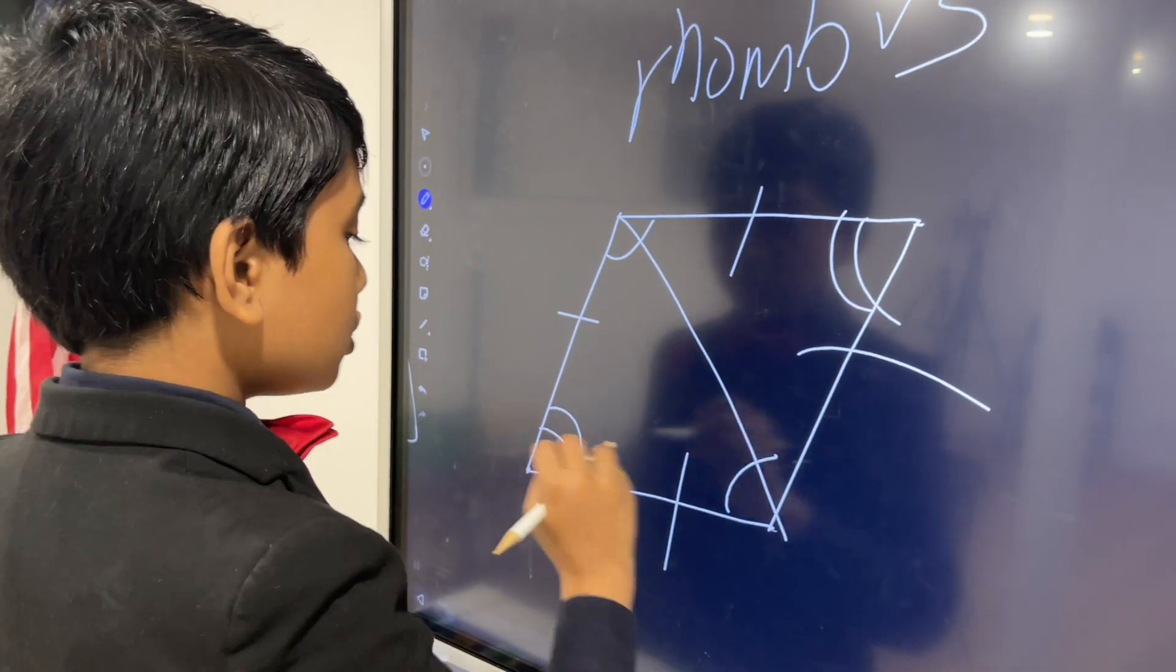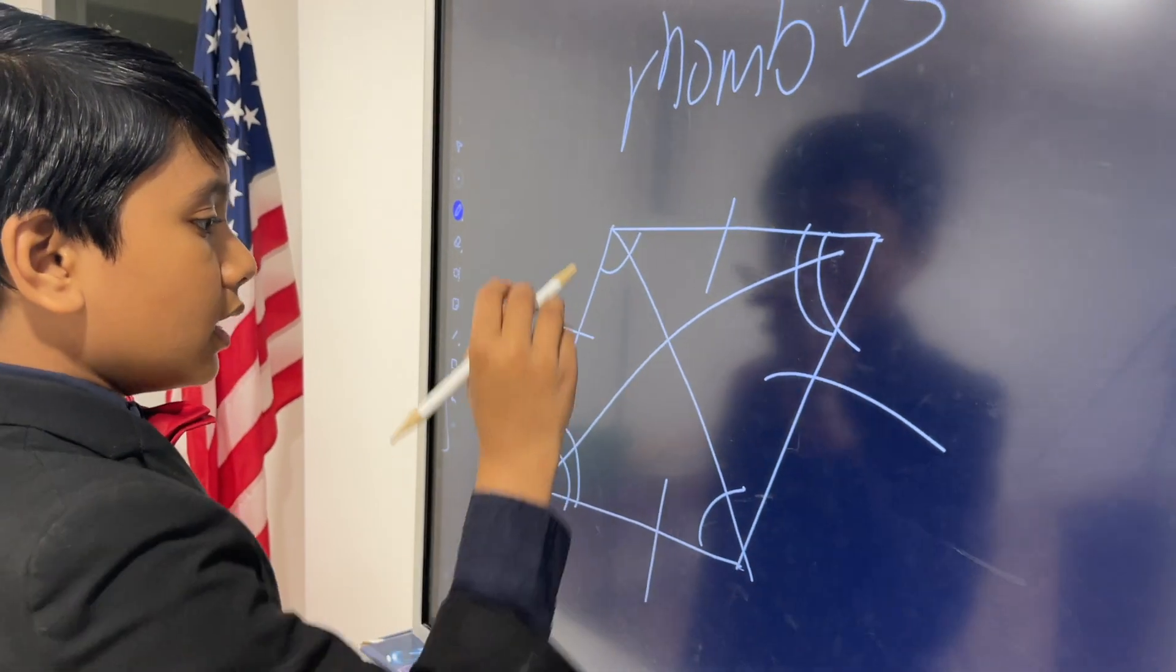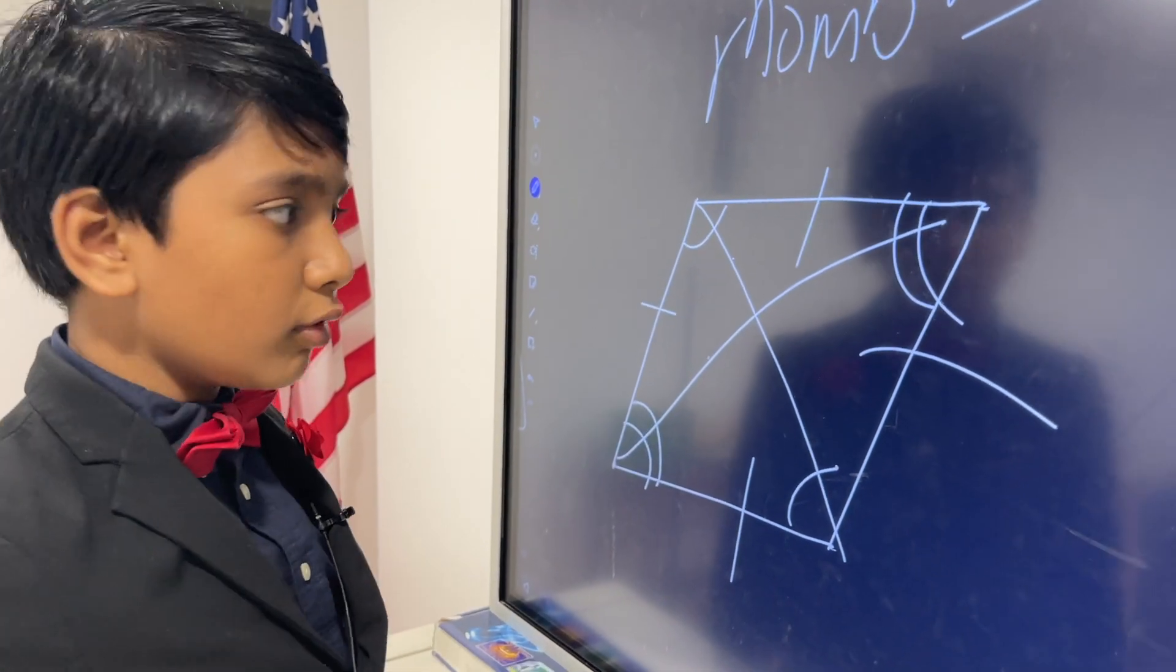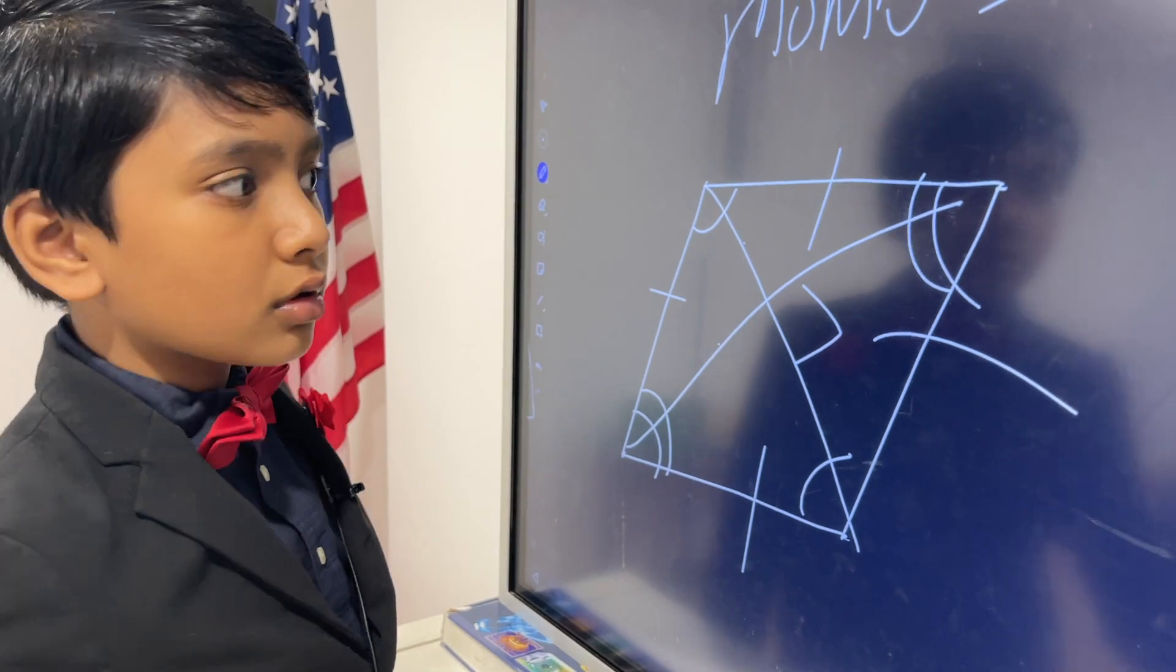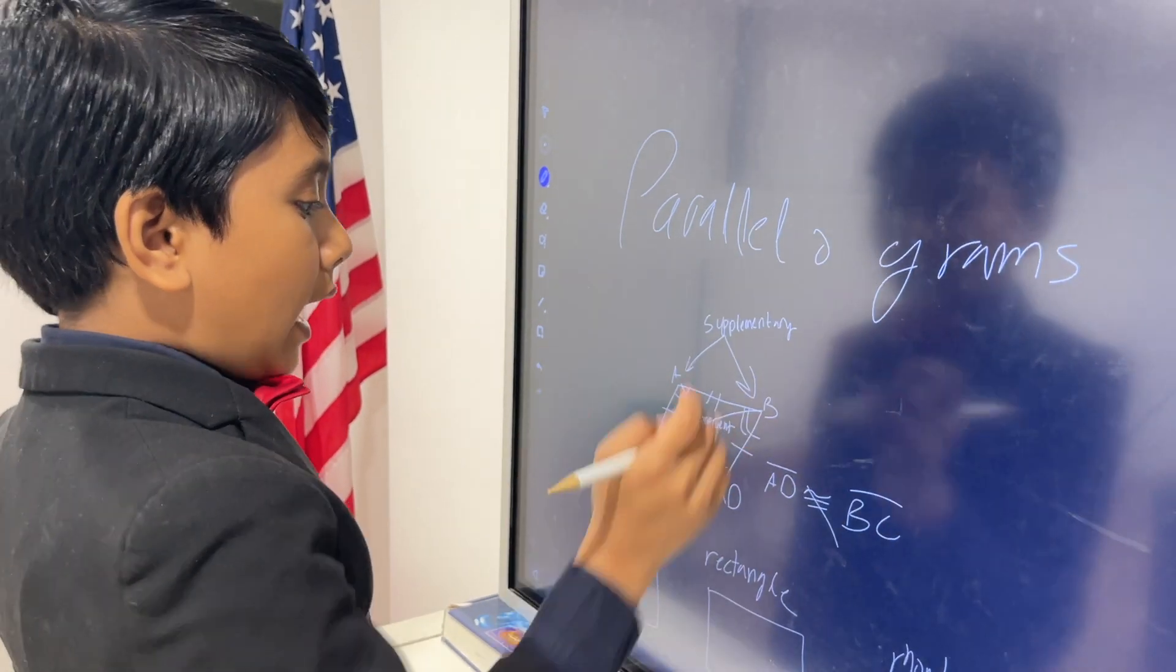Its diagonals are also not congruent. So, these two are not congruent. However, they are perpendicular, unlike in what we had earlier.